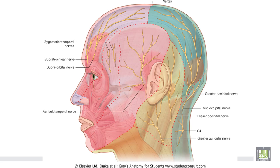The ophthalmic division of the trigeminal supplies the upper part of the face and the upper eyelid. The maxillary division supplies the lower eyelid and the upper lip, while the mandibular division supplies the lower lip down to the lower border of the mandible.